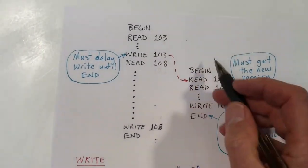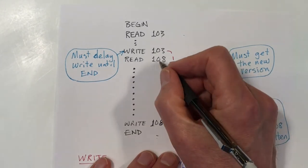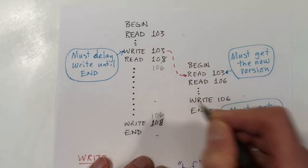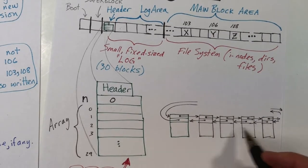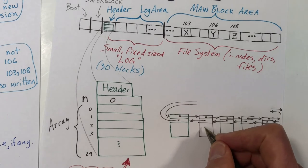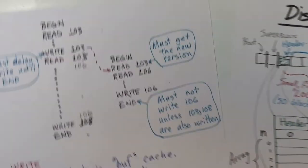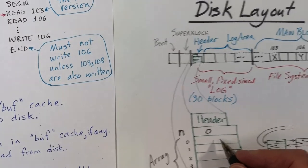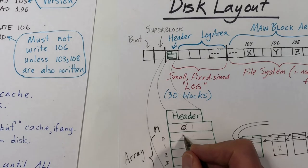Now I'm going to walk through this example by updating the disk on paper, changing block 108 to block 106 to make it more interesting. We begin with the read of block 103. We start by searching the buffer cache for that block, find it's not there, perform a disk read, allocate a buffer, and read block 103 into that buffer. Next we write that same block — we allocate an element in the log, change n to 1, and set the first element to 103. This block will go into the log area, but we don't write it just yet.